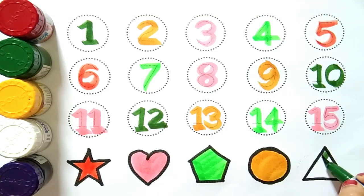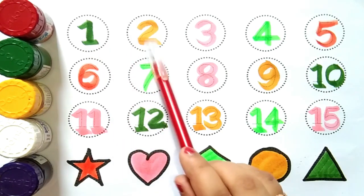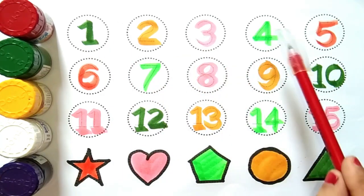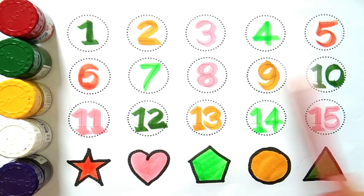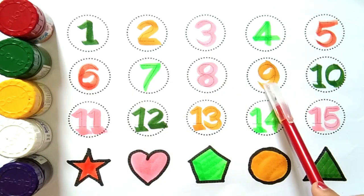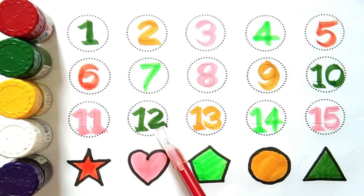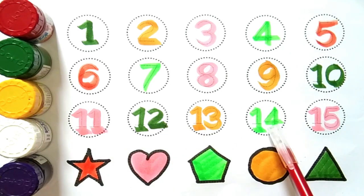Green color triangle. One, two, three, four, five, six, seven, eight, nine, ten, eleven, twelve, thirteen, fourteen, fifteen. Star.